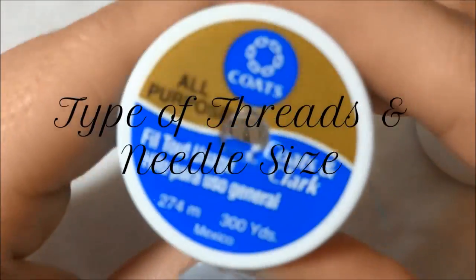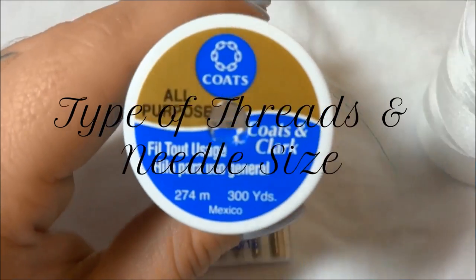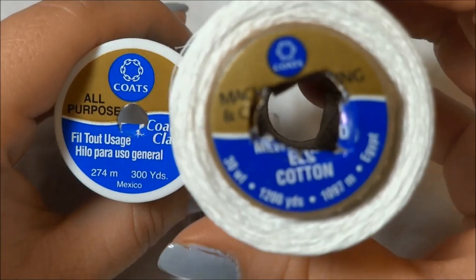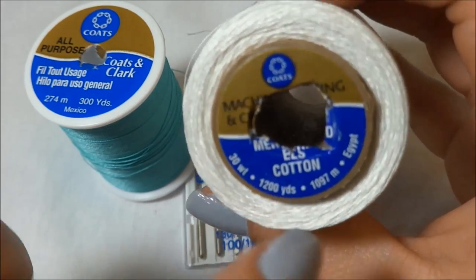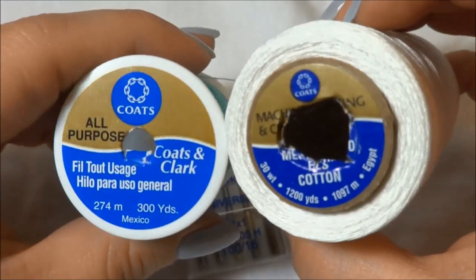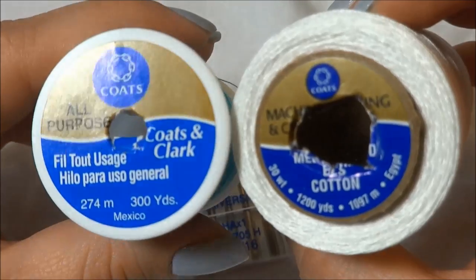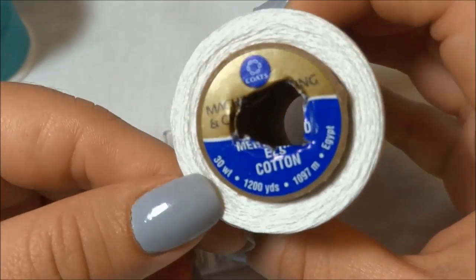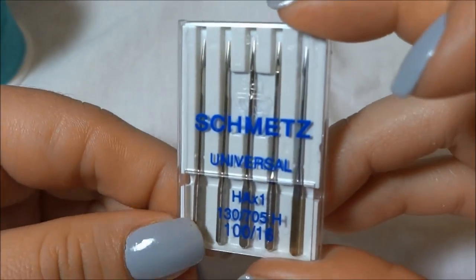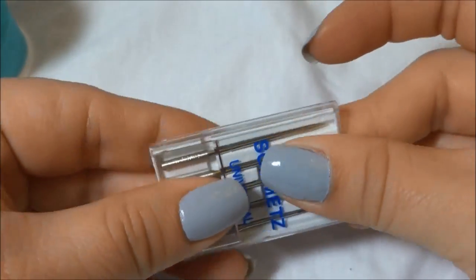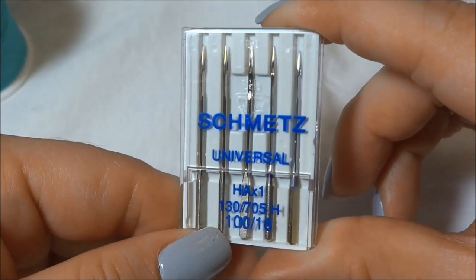And now our last topic is going to be the type of thread that I use and the needle size. I have gotten asked that. So basically what I use is I go to Walmart and I get this brand right here. It's called Coats. I think one of them is cotton and one of them is all-purpose. It works just fine, but I have been sticking mostly to this cotton thread. It's about 1200 yards. And I really like it. And the needles that I use are universal. I haven't used any other size because universal has been just working really great.